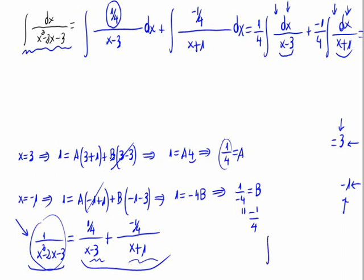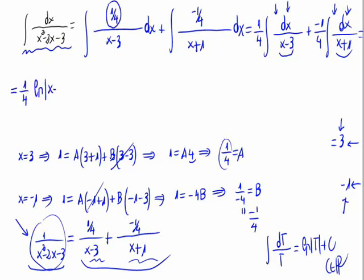We have two quotients where the derivatives of the denominators equal the numerators. Using the formula that the integral of dt/t equals the natural logarithm of the absolute value of t plus a constant, this becomes: (1/4) times ln|x minus 3| minus (1/4) times ln|x plus 1|, plus C.